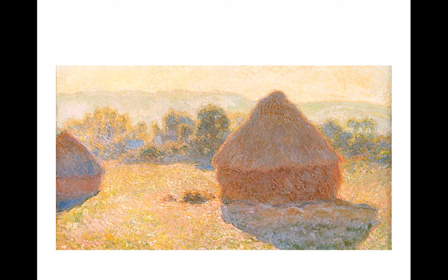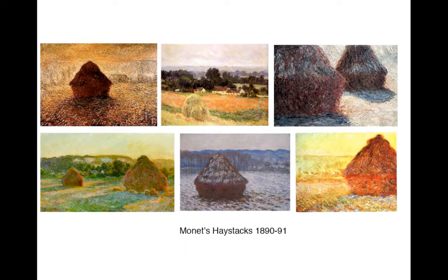Light was very important to the Impressionists. They believed that light reveals the constant change that takes place in the physical world, and therefore is the basis of this belief that the only reality is the reality of the single instant, and the only lens through which to view that is the personal lens. Here you can see a number of Monet's haystacks — he does a series of these works in the late 19th century.